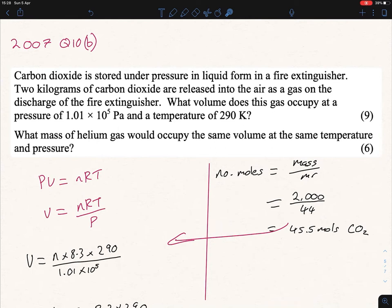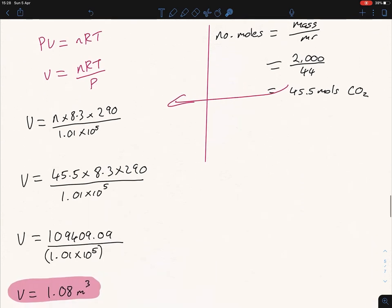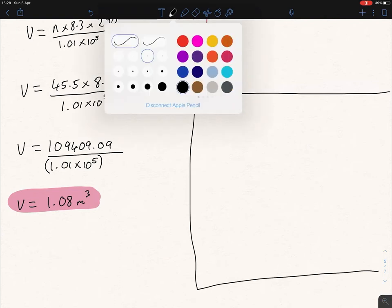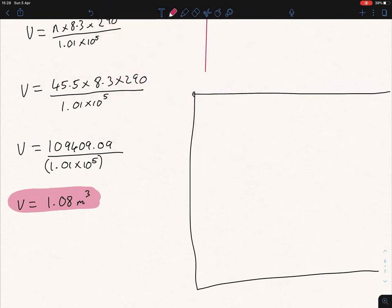Now the next part of this is what mass of helium gas would occupy the same volume at the same temperature and pressure. So we're looking for the mass. Let's put it into our formula.